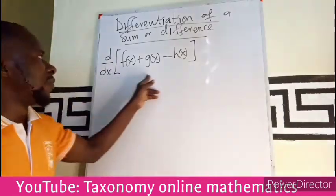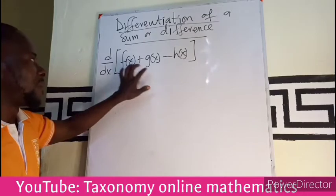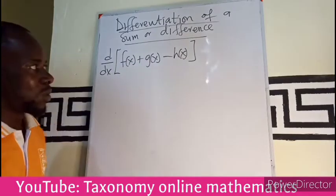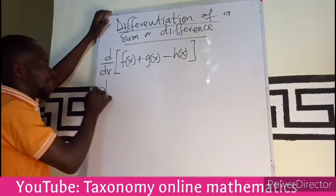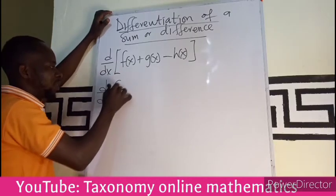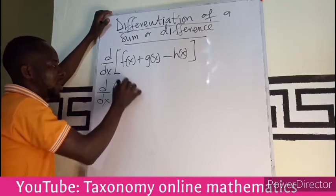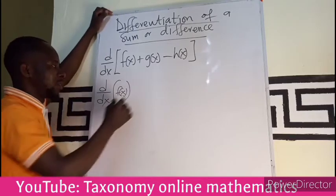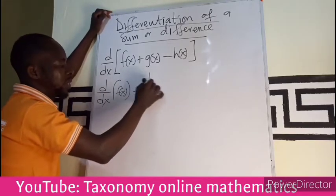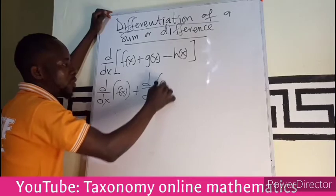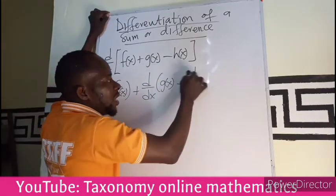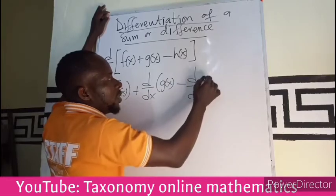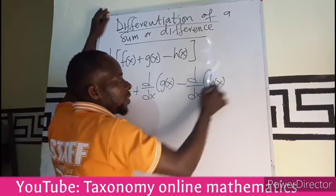If I have a differentiation whereby the functions are adding, all that I'm expected to do is to find the differentiation of the function f(x), add it onto the differentiation of the function g(x), then subtract the differentiation of h(x).